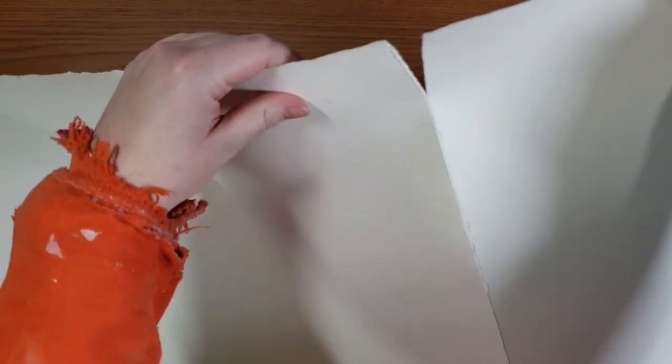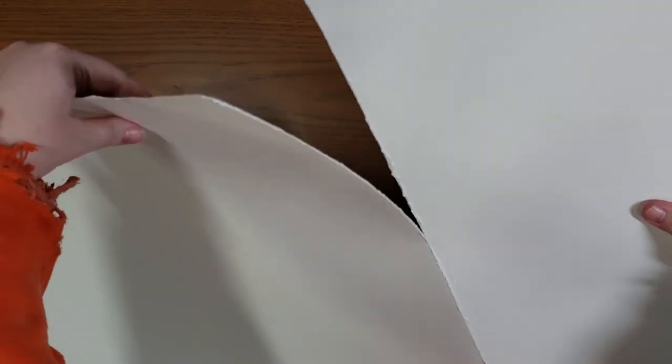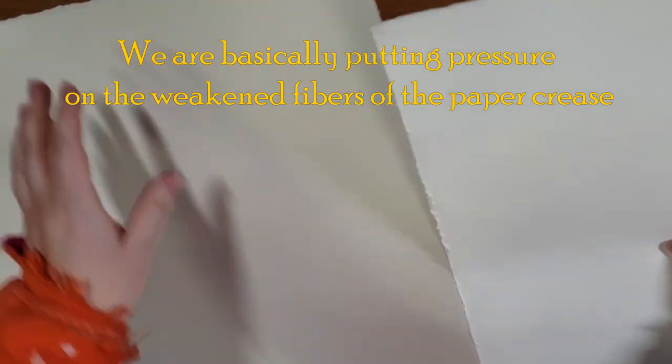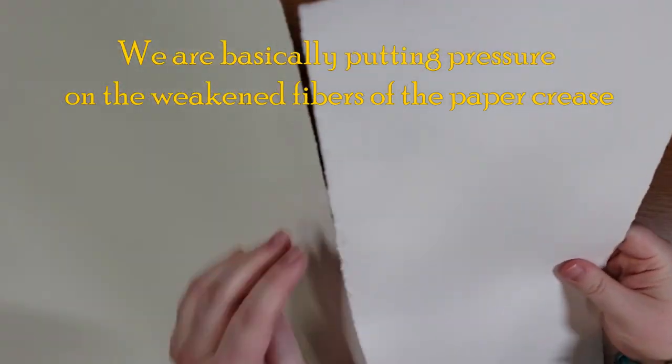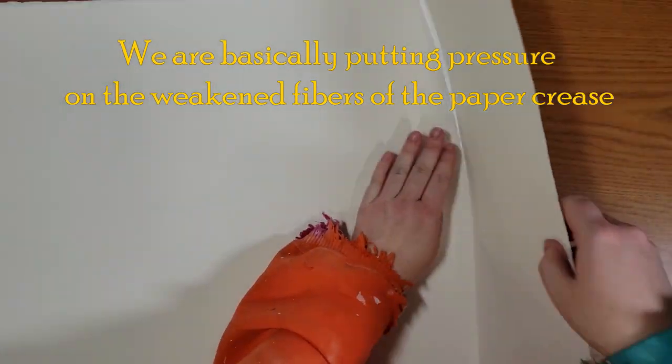All right, I think we're ready to tear. So I'm basically just folding it into a V-shape and just gently pulling, putting enough pressure that it'll just rip that edge. There are other ways to tear it but this really is the best way.